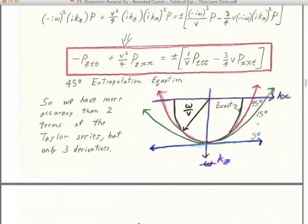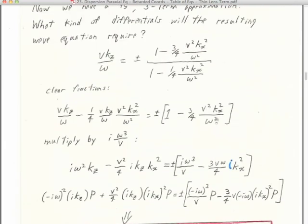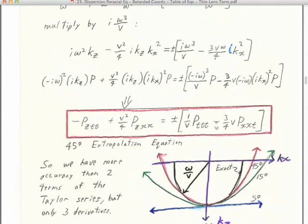We are in notes 23 now, about a third of the way through. We've already discussed dispersion paraxial equations, and we're about to go into retarded coordinates. We're on page 82.